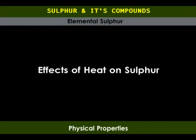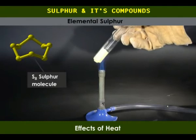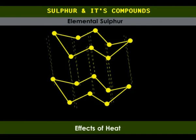When sulfur is heated, it melts at 113 degrees Celsius into a clear pale yellow liquid that flows easily. At this point, the intermolecular forces are broken, separating the individual molecules, resulting in liquid sulfur.